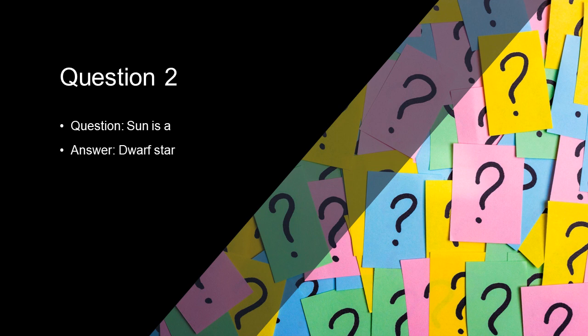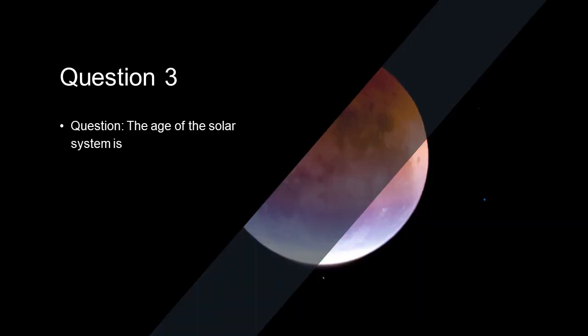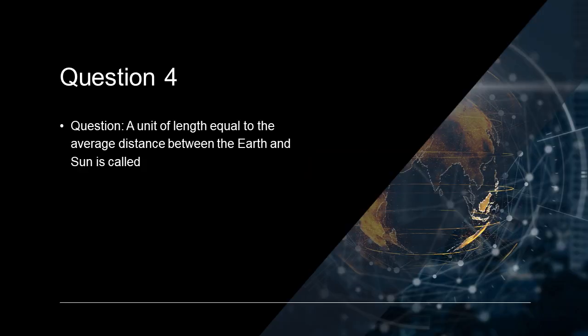Sun is a dwarf star. The age of the solar system is 4.5 billion years. A unit of length equal to the average distance between the earth and the sun is called astronomical unit and it is equal to 93 million miles.